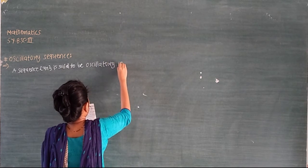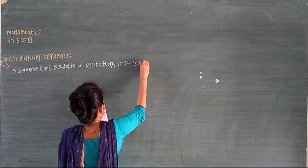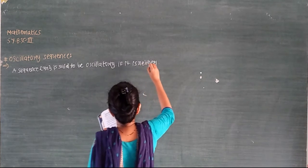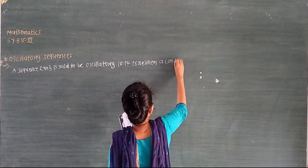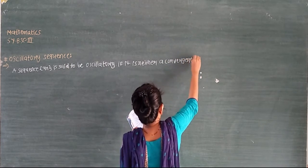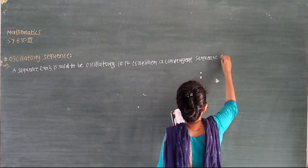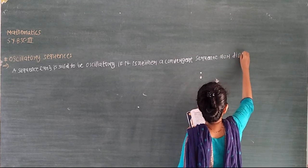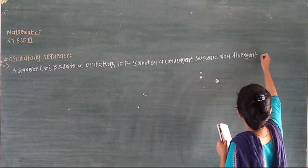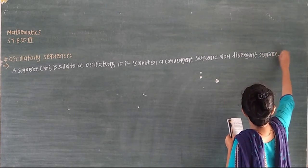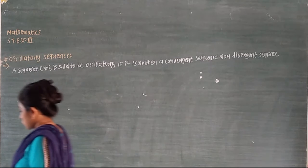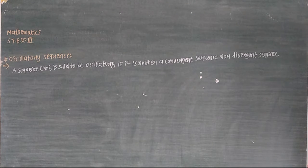A sequence is said to be convergent, divergent, or oscillatory. So we have convergent, we have divergent, and we have oscillatory sequences.